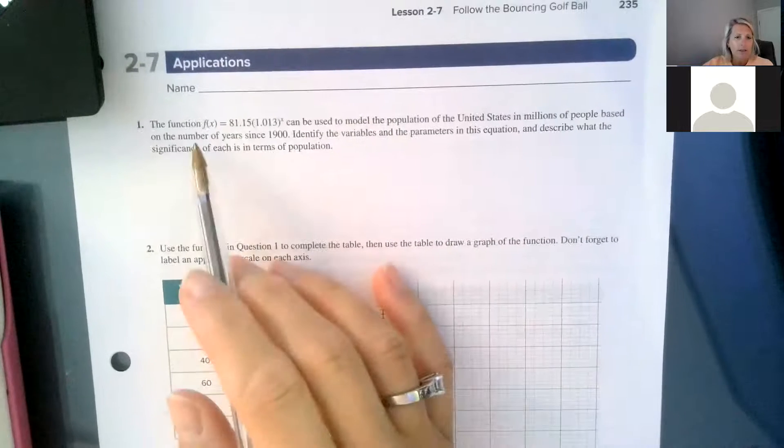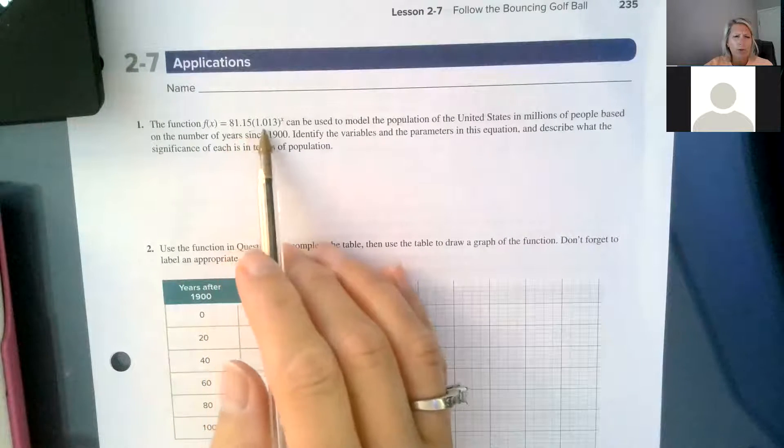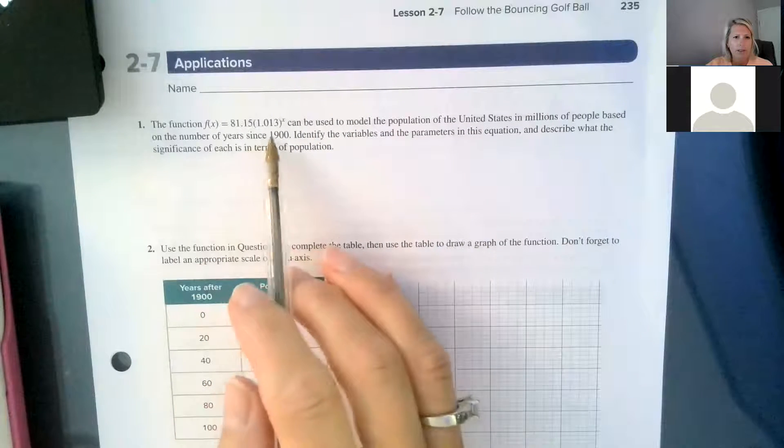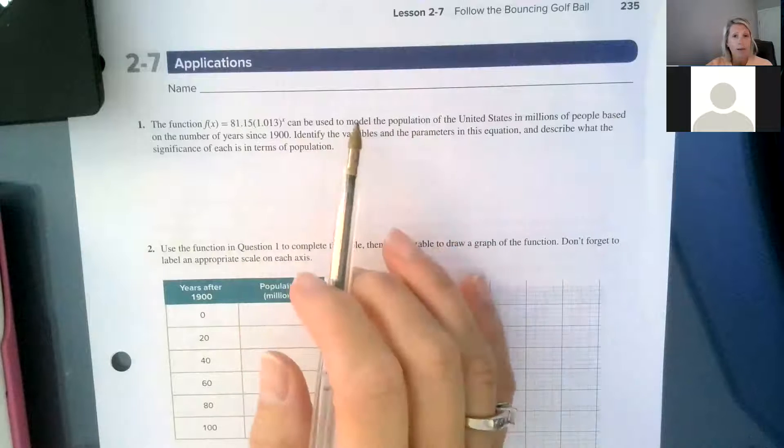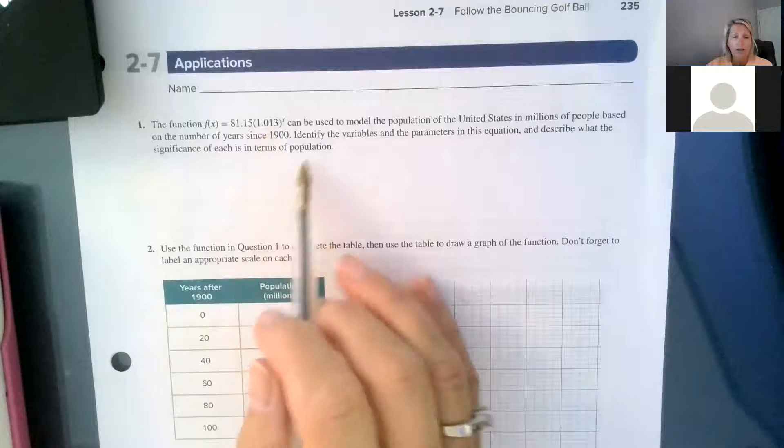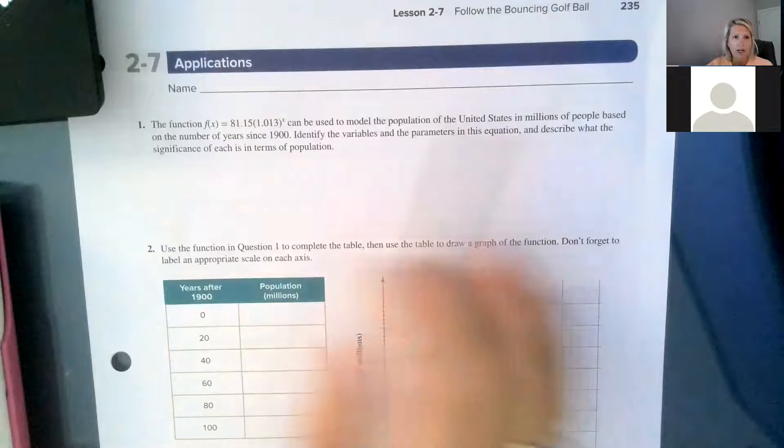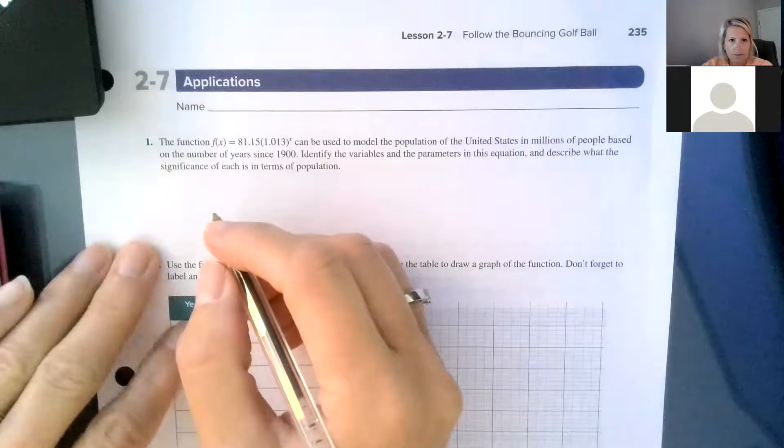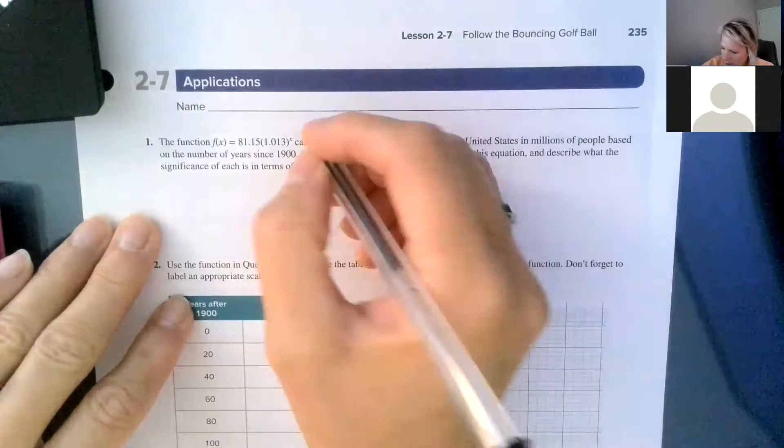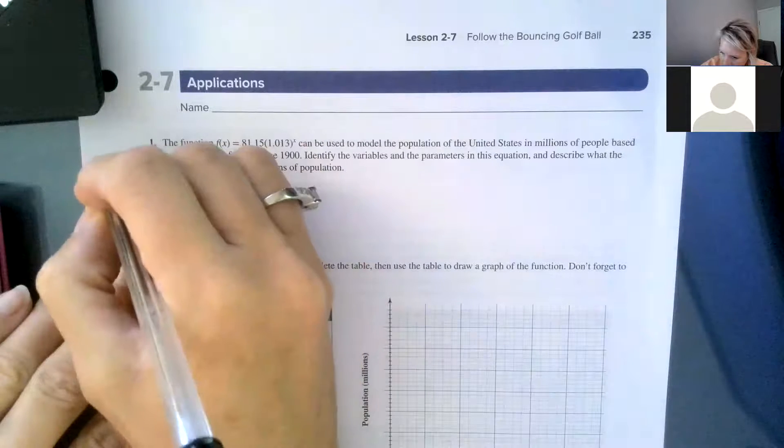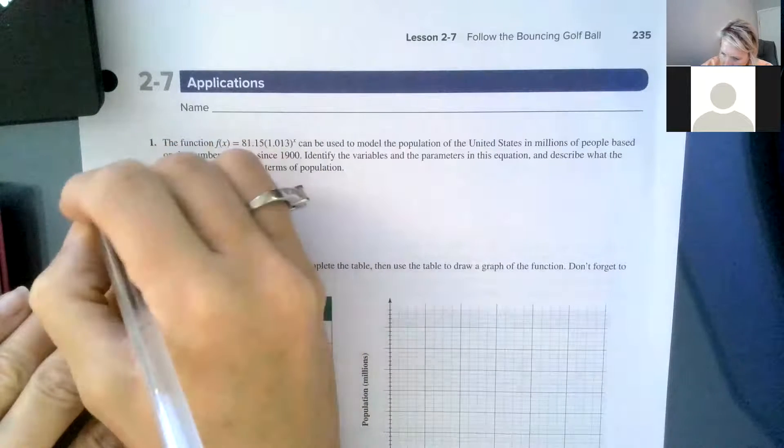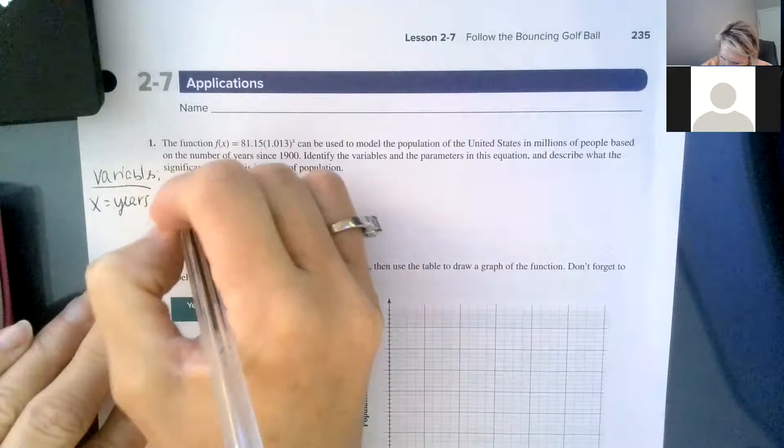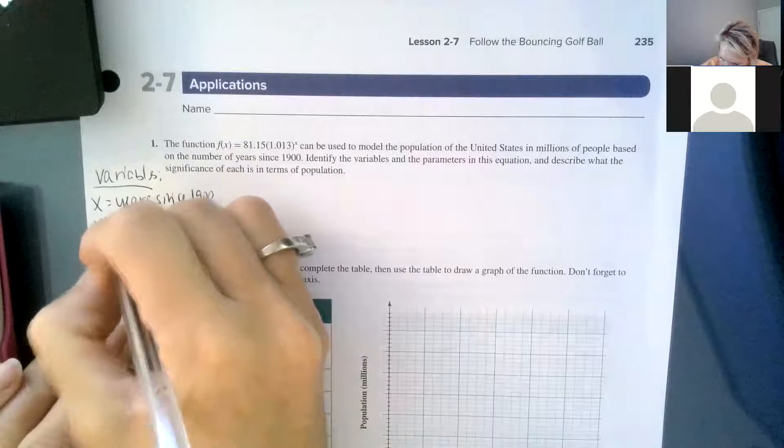So here on 2.7 it says we have this function 81.15 times 1.013 to the x can be used to model the population of the U.S. in millions of people based on the number of years since 1900. Identify the variables and the parameters in this equation and describe what the significance of each is in terms of population. So variables are going to be x and y. X is years since 1900 and y is population.